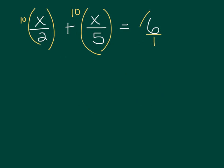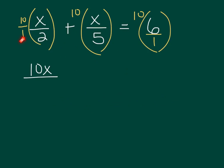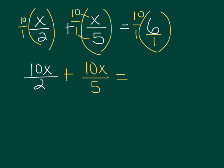This should look familiar. It's okay to multiply everything by 10 because I'm doing the same exact thing to everything in the equation. So I'm going to multiply 10 times x over 2 — that gives 10x over 2. Then I have 10 times x over 5, giving 10x over 5. And 10 times 6 over 1, which is just 60.